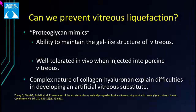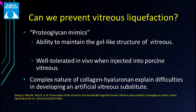This entire story begins with vitreous liquefaction — is there any way to prevent it? In animal models, researchers injected proteoglycan mimics into bovine and porcine vitreous and found they could maintain the gel-like structure. However, the complex nature of collagen-hyaluronan interactions makes developing an artificial vitreous substitute difficult in the real world.